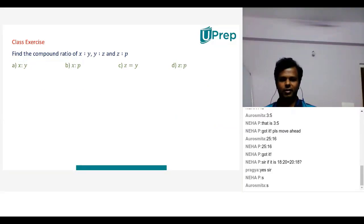The compound ratio of X is to Y, Y is to Z, Z is to P. Still don't do this, type the answer in the chat box.